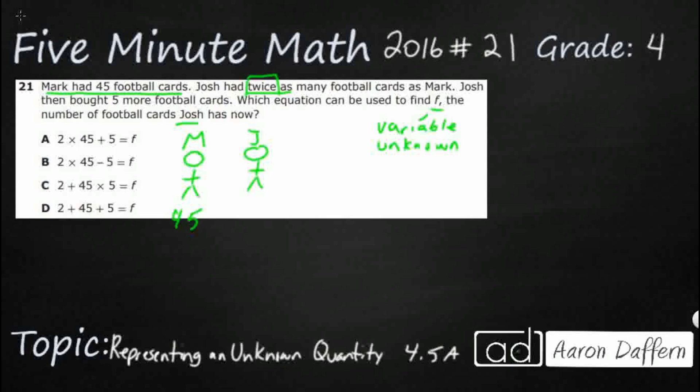Josh has twice. So we have to know what twice means. Twice means double. If you want to talk about it in terms of multiplication, we can say it's two times. So Josh has twice as many football cards as Mark. And so we can say that he's got two times what Mark's got. And Mark's got 45. So what we need to do is we need to say it is two times 45.